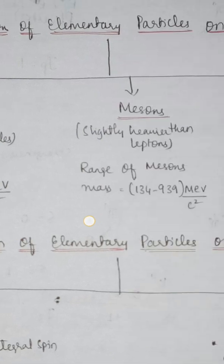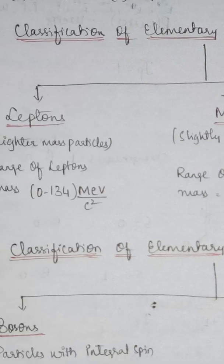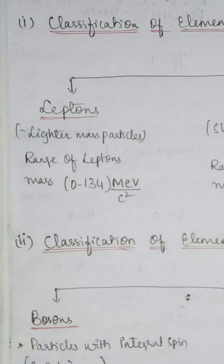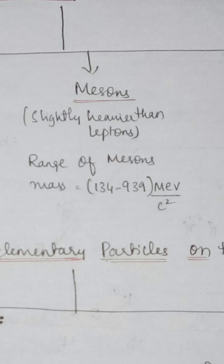The next category is mesons. Mesons are slightly heavier than leptons. The lepton mass range is 0 to 134 million electron volts per c-squared, while mesons are slightly heavier than that.